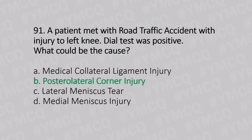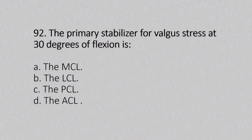Now let's move to question number 92. The primary stabilizer for valgus stress at 30 degrees of flexion is. Option A: the MCL. Option B: the LCL. Option C: the PCL. Option D: the ACL. And the answer is Option A, the MCL.